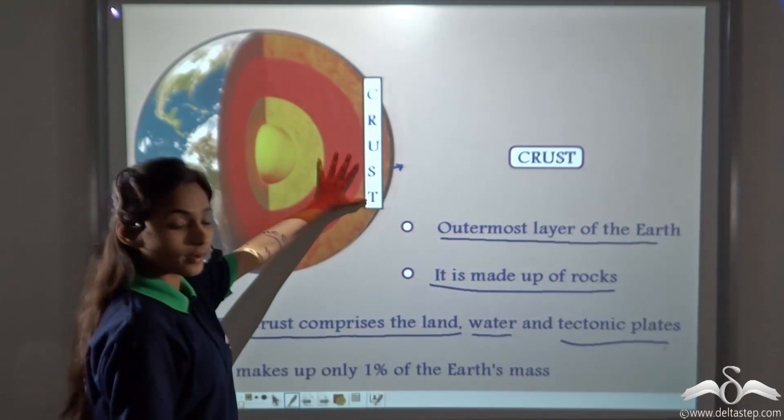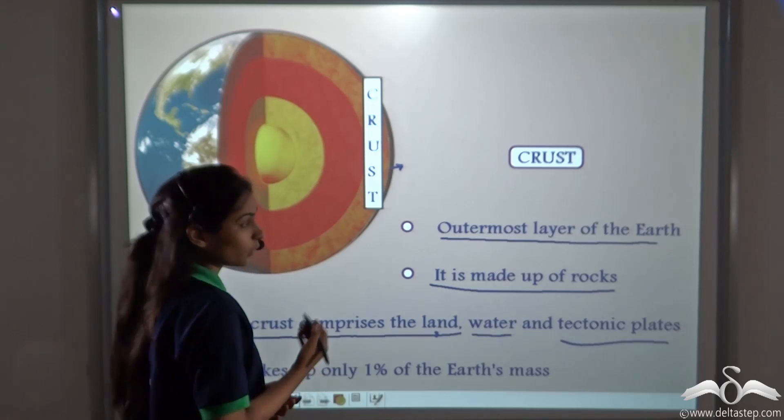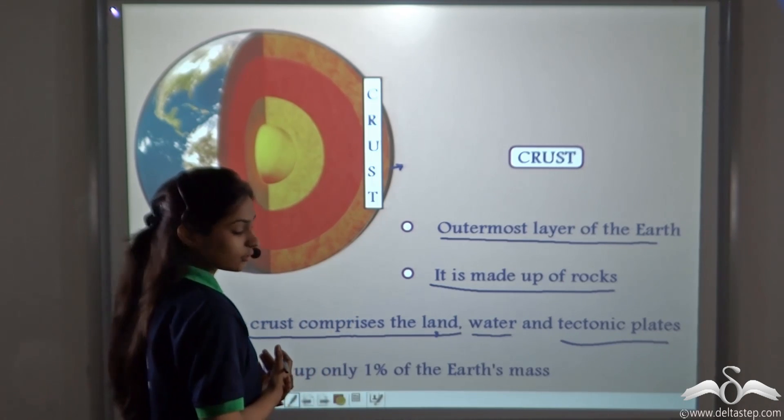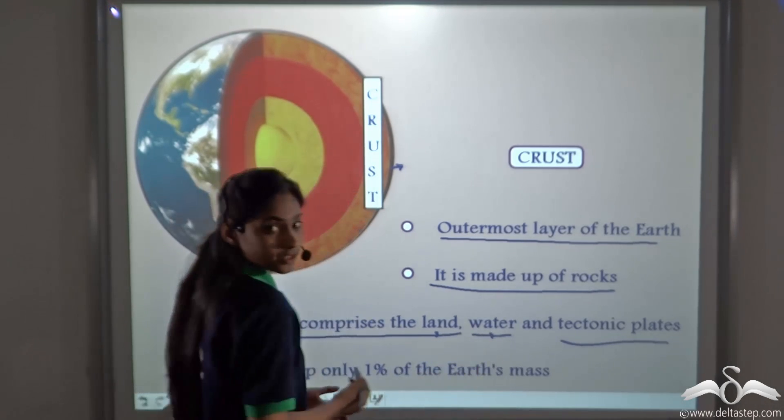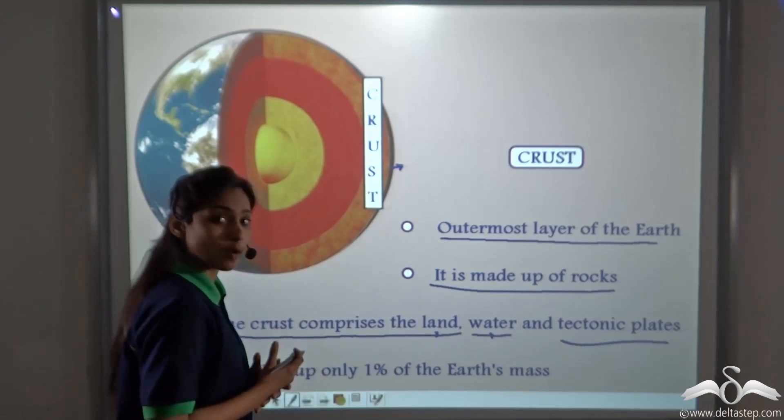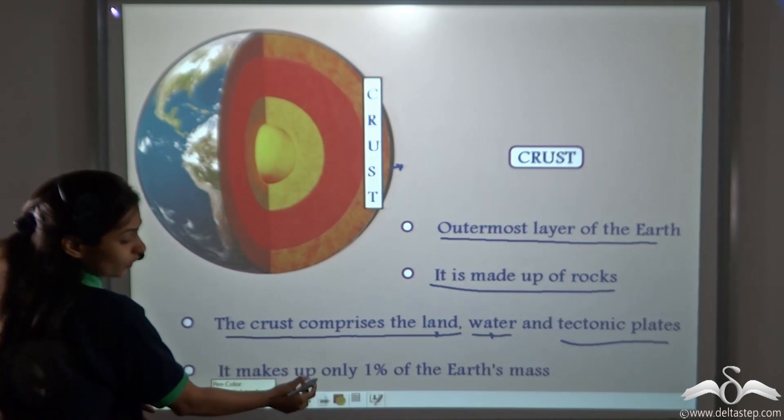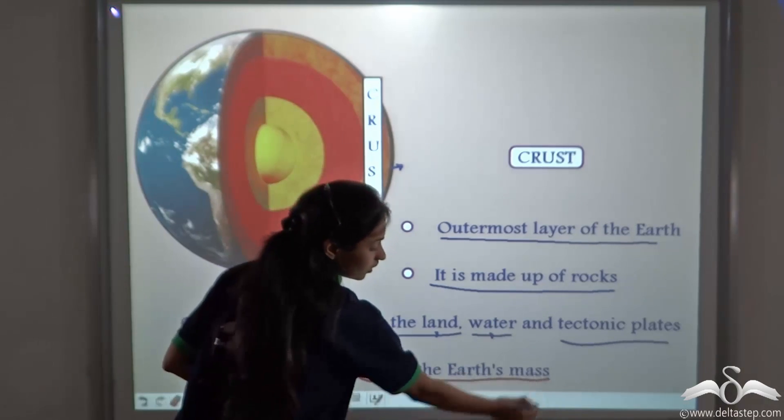Now what are the things we can see on the crust? The land. This is the place on which we live. Water such as oceans, seas, rivers. And tectonic plates are large plates made up of rocks. And it makes up only one percent of the earth's mass.